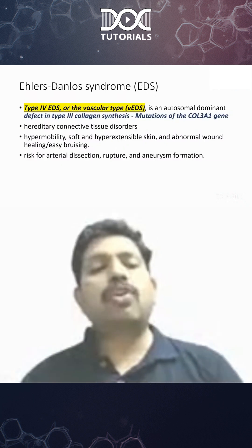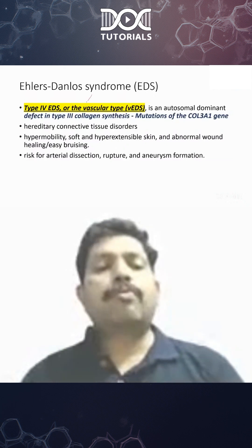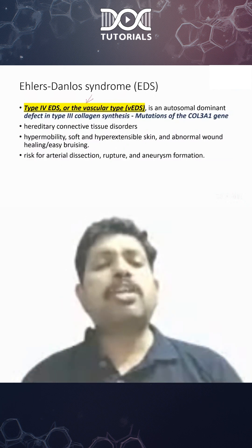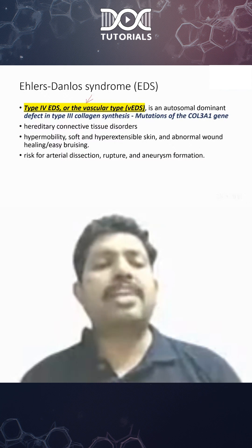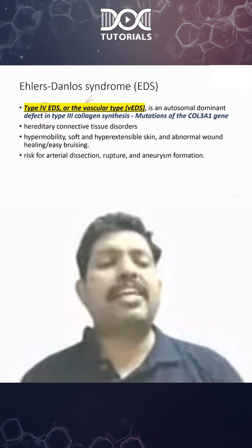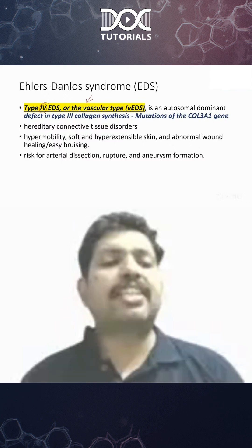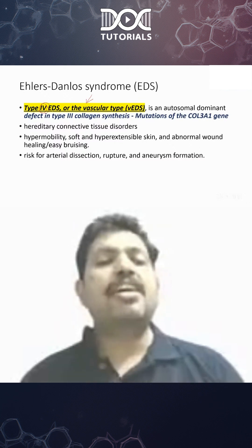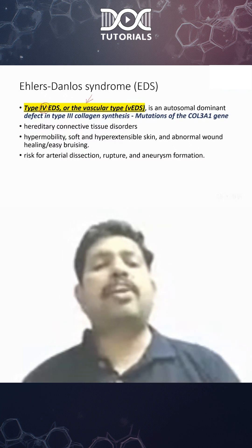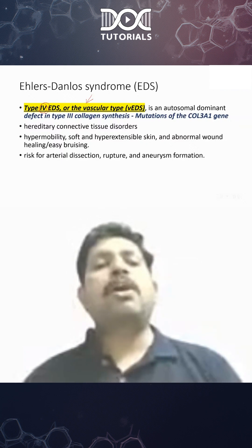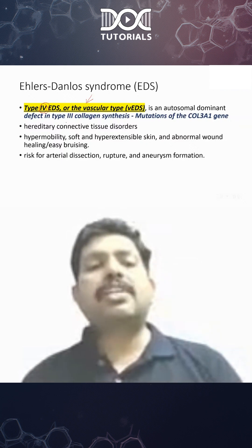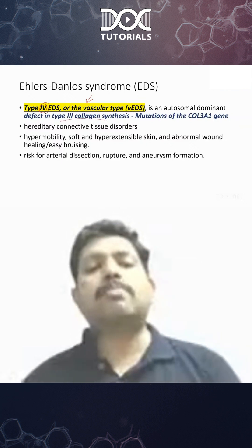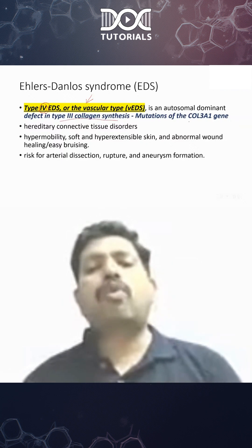Ehlers-Danlos syndrome — we have seen that there are many types. Ehlers-Danlos type 4: how to remember is IV — intravenous, intravascular. IV is the vascular type of Ehlers-Danlos syndrome. The problem is type 3 collagen synthesis because of the mutation of the COL3A1 gene.